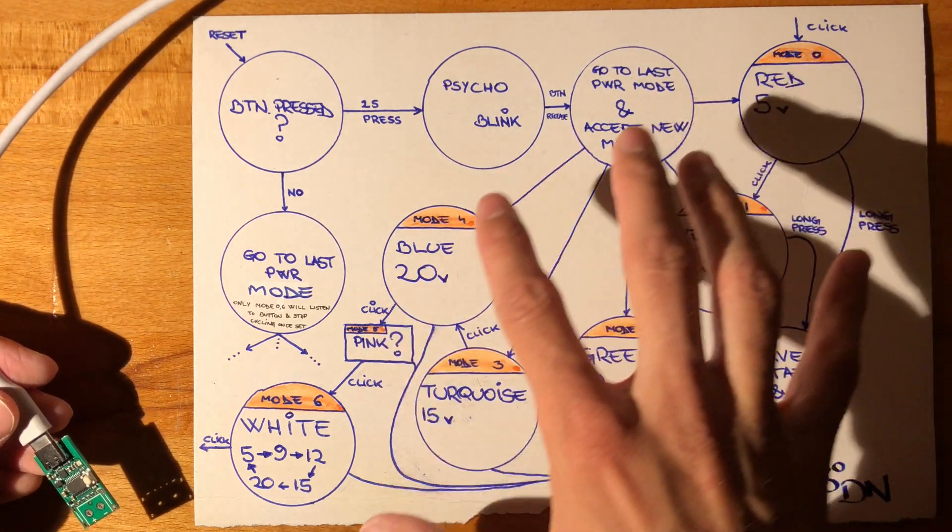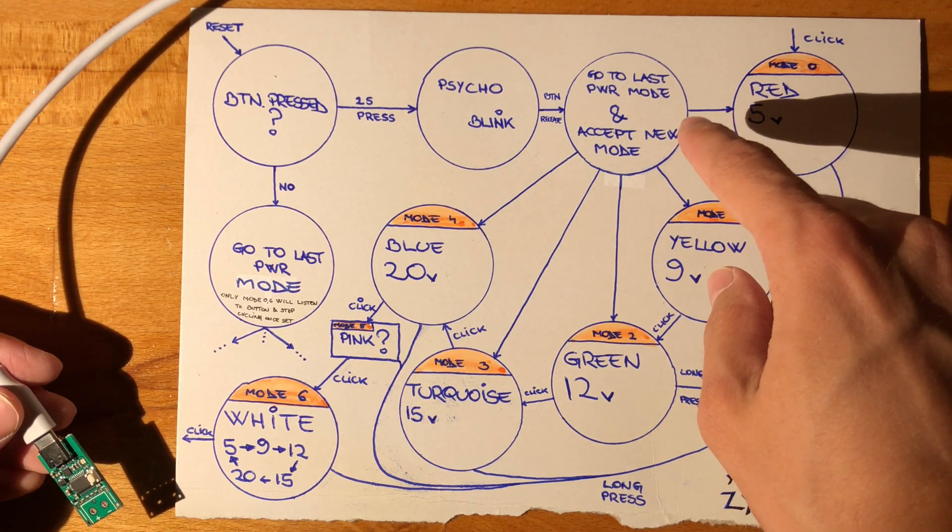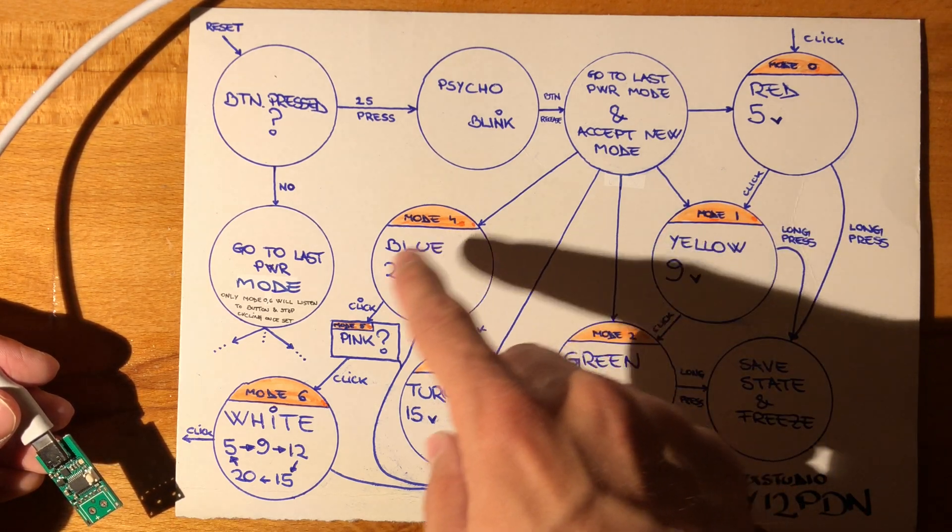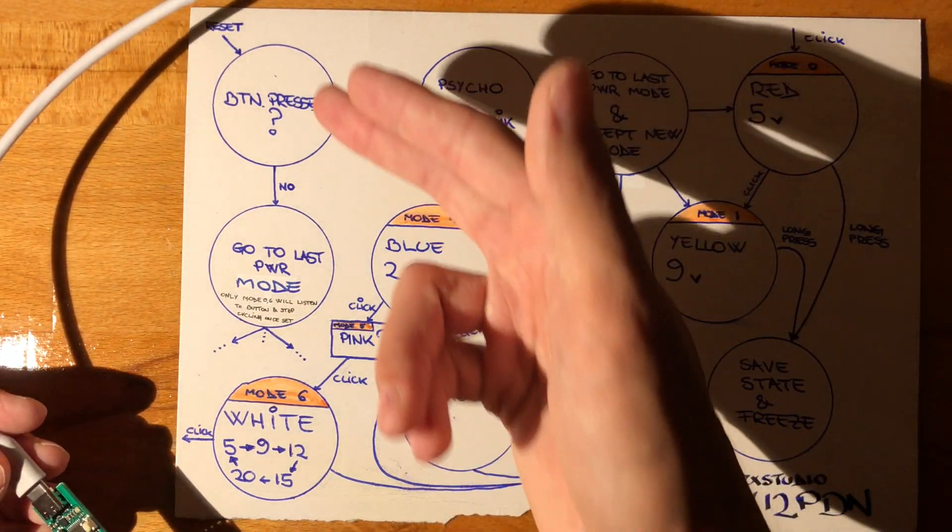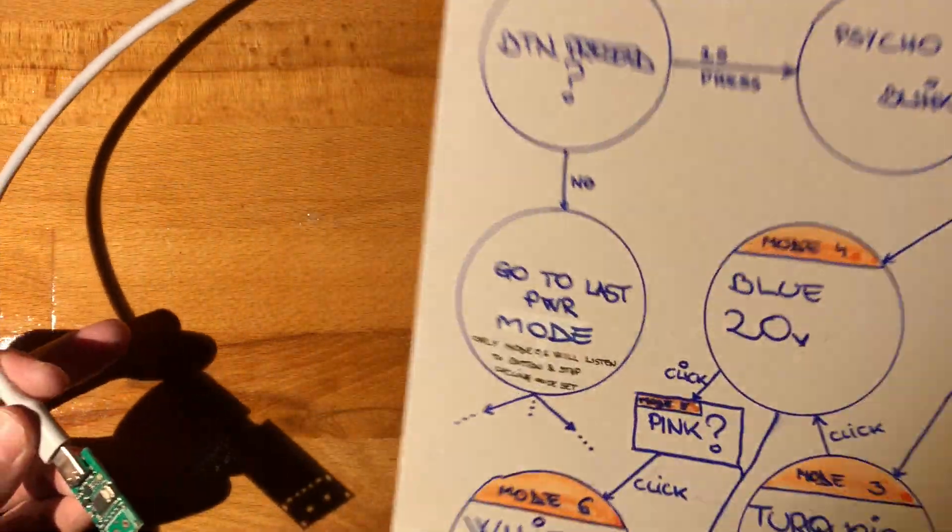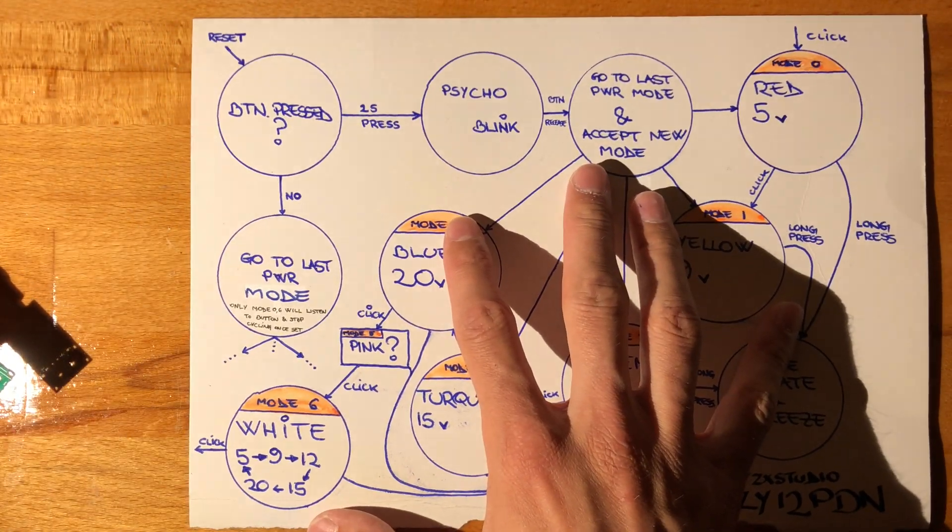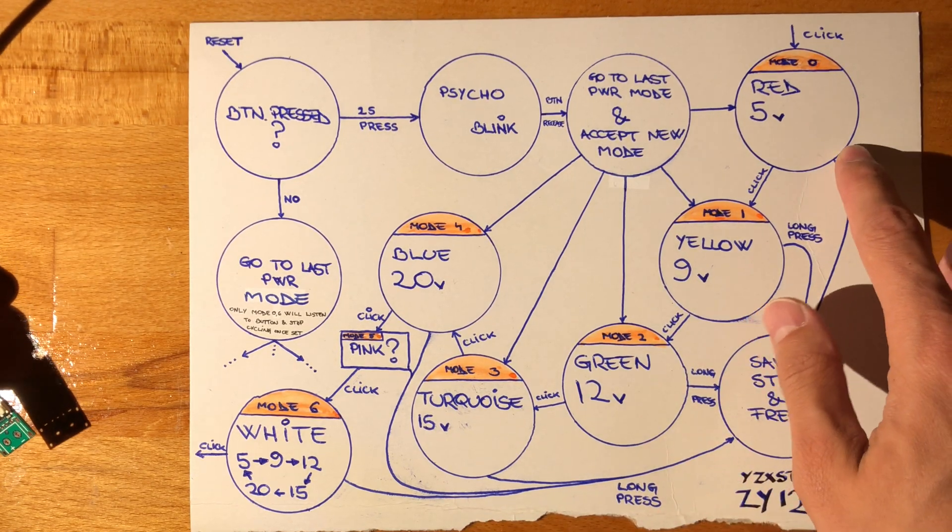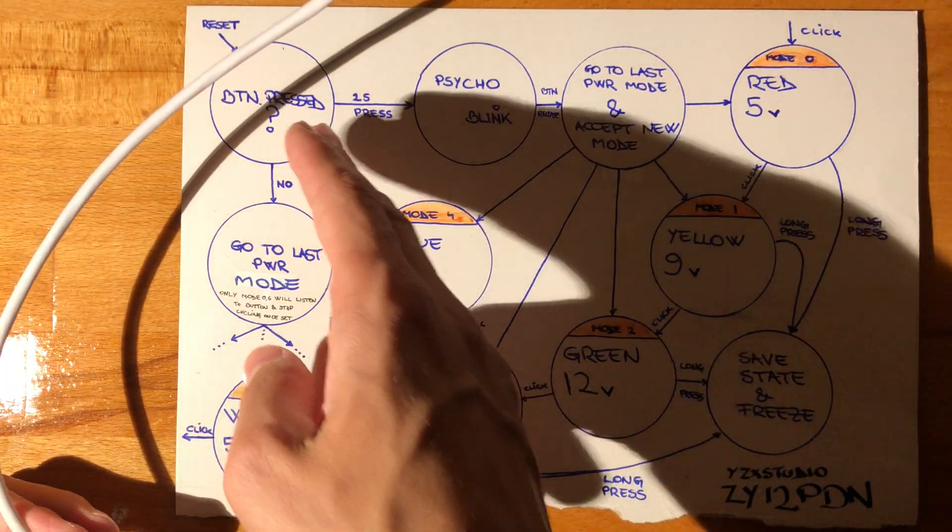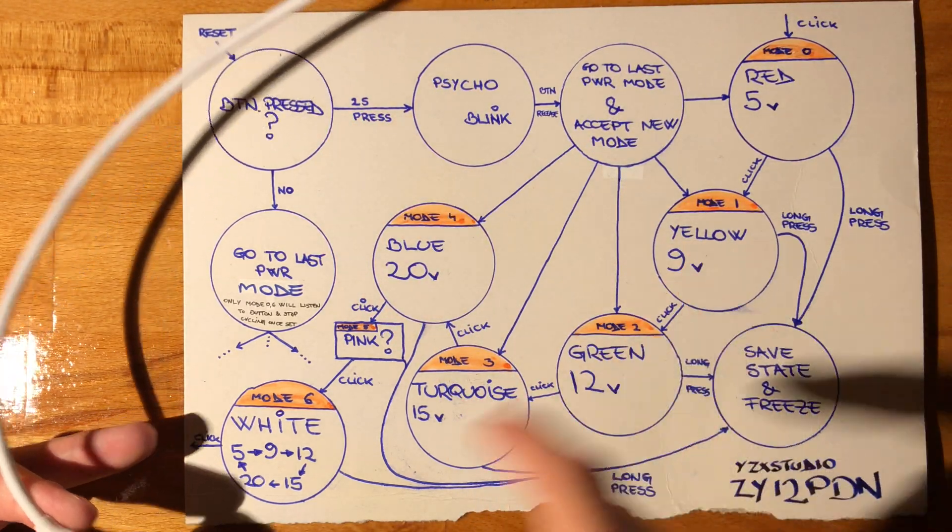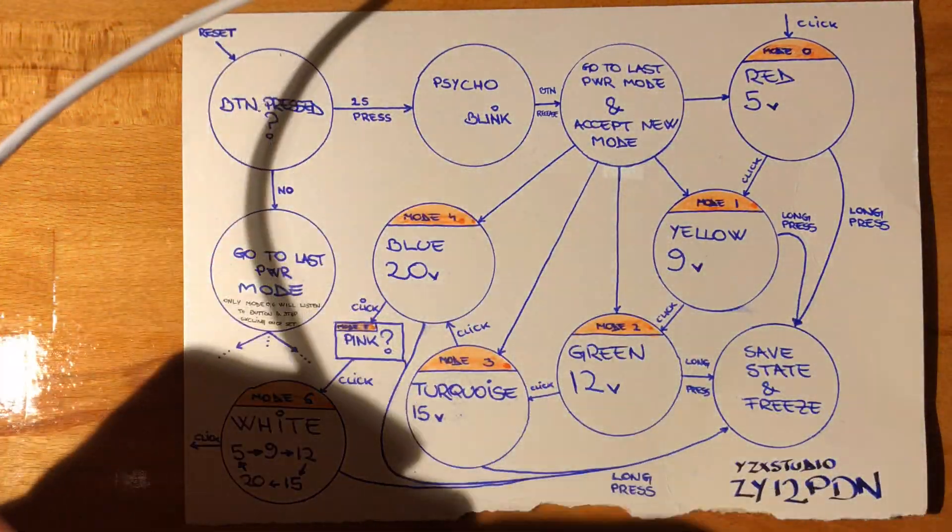There's a few things I've omitted from this diagram because it's done on paper and it's already pretty cluttered. You basically click through these - select a color, select a voltage, then long press, and then you'll have to reset the thing and it'll go to the last power mode. However, as I've written here in very small font, only mode 0 and mode 6 allow you to actually change the voltages. These other ones are actually fixed. So if you boot into one of these modes, it'll actually stay here and ignore the button.